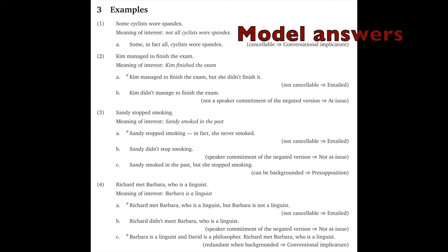I didn't include a model answer to this on my model answers handout because there's a whole page of such model answers on the 'Diagnosing Different Kinds of Meaning' flow chart handout, and those examples cover every scenario you can face given our framework. I'd suggest you adopt the same format I used — just try to specify unambiguously how you're reasoning using the flow chart. You don't need to write very much here.